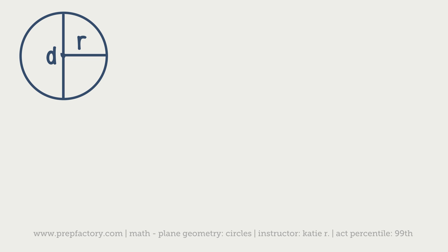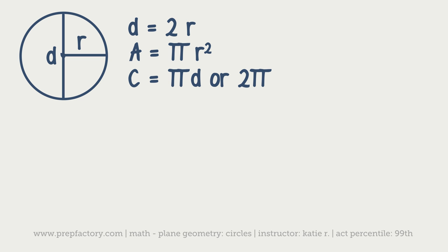Knowing what the radius and diameter are, you can find the circumference or the area of the circle, depending on what you're supposed to find. The area of a circle is pi r squared. If you have the diameter, that's fine — diameter divided by 2 equals radius, or diameter equals 2 times the radius. Circumference, which is the same as perimeter — the distance you'd walk around the circle — is pi d or 2 pi r.